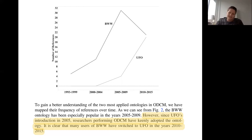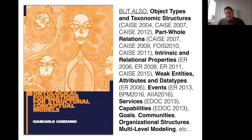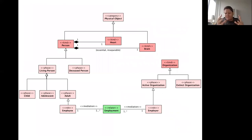For those who want to know more about UFO, there is a paper we published a few years ago in Applied Ontology that gives the whole rationale and history of the ontology. There is also a book that describes how these different theories of UFO have been used to address classical conceptual modeling problems — some of which I'll mention today — and how these tools and the language were designed.